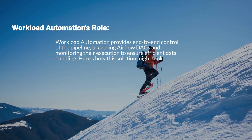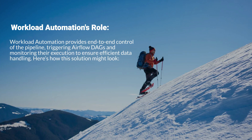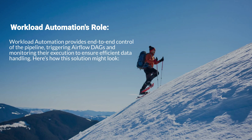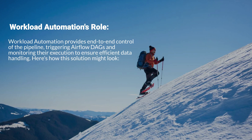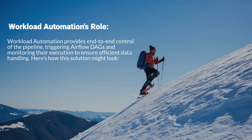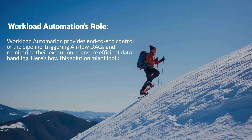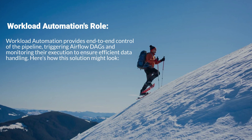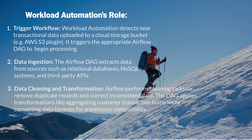Workload Automation provides end-to-end control of the pipeline, triggering Airflow DAGs and monitoring their execution to ensure efficient data handling. Workload Automation detects new transactional data uploaded to a cloud storage bucket — for example, the AWS S3 plugin — and triggers the appropriate Airflow DAG to begin processing.